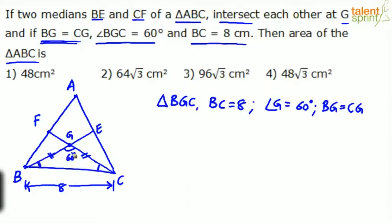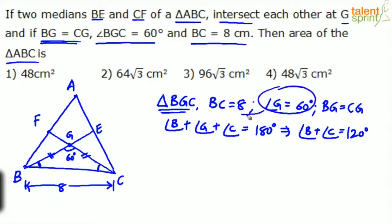Because BG equals CG, angle B should equal angle C in this particular triangle. We know that angle B plus angle G plus angle C is 180 degrees. So angle B plus angle C equals 120 degrees, because G equals 60 degrees. And since angle B equals angle C, each must be 60 degrees. Both angles are equal and the sum is 120, so 60 degrees each.